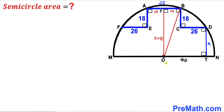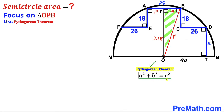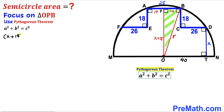In the next step, I have connected center O with vertex B, giving us right triangle OPB. OB is the radius of this semicircle, so I'll label it as r. Applying the Pythagorean theorem — a squared plus b squared equals c squared — our hypotenuse is r, and the two legs are 14 and x plus 18. So we get: (x + 18)² + 14² = r².